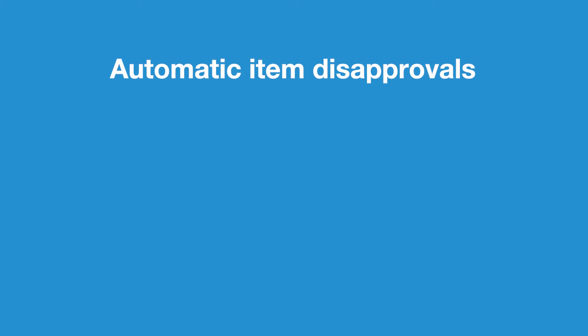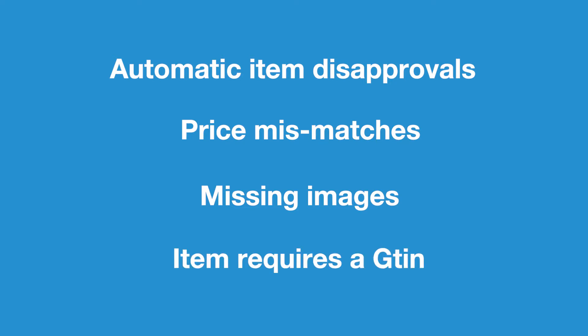Some common disapprovals include automatic item disapprovals, price mismatches, and missing images. And of course, the one that is probably the most common is item requires a GTIN. As of May 2015, Google has been requiring GTINs for products that are sold by other merchants and are branded products.